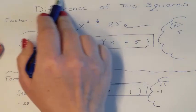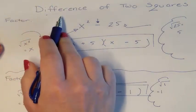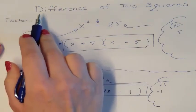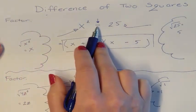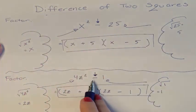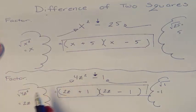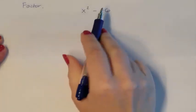Now, difference is the only rule we have. There is no sum of two squares. So if this is not a subtraction sign, you just can't factor it at all.